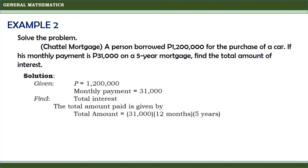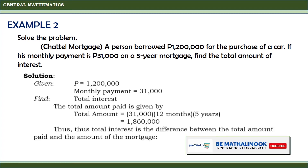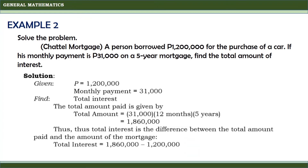Therefore, the total amount to be paid is equal to 1,860,000 pesos. The total interest is the difference between the total amount paid and the amount of the mortgage. Therefore, the total interest is equal to 1,860,000 minus 1,200,000, which equals 660,000. Therefore, the total interest of the mortgage is 660,000 pesos.